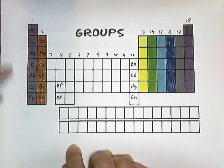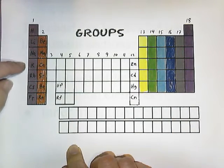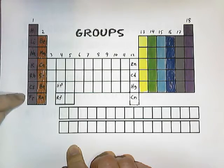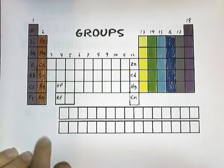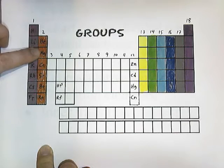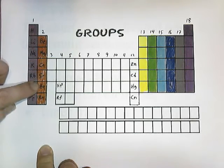Group one contains hydrogen, lithium, sodium, potassium, rubidium, cesium, and francium. Group two contains beryllium, magnesium, calcium, strontium, barium, and radium.